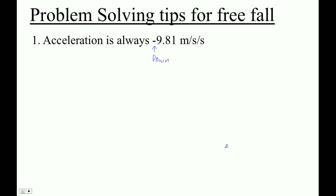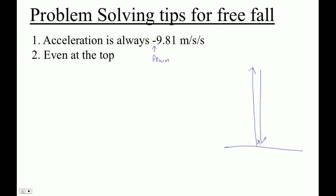So if you think of an object taking off from the surface like an air rocket, it'll go up, it'll stop, it'll turn around and come back down. And this is sort of a hard thing to wrap your mind around, but even at the top, when its velocity is zero, it's still accelerating downward.